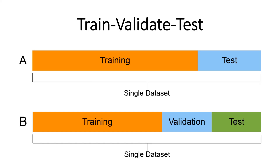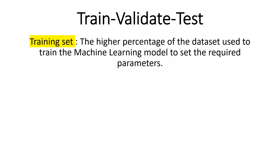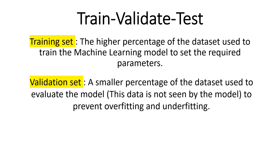We have a dataset that we have to work with. This dataset can be split into two categories — training and test — or even more into three categories by splitting it into training, validation, and test sets. The training set is the higher percentage of the dataset, which is used to train the machine learning model to set the required parameters. Depending on the size of the dataset, it can be from 60 to 90 percent of all your data.